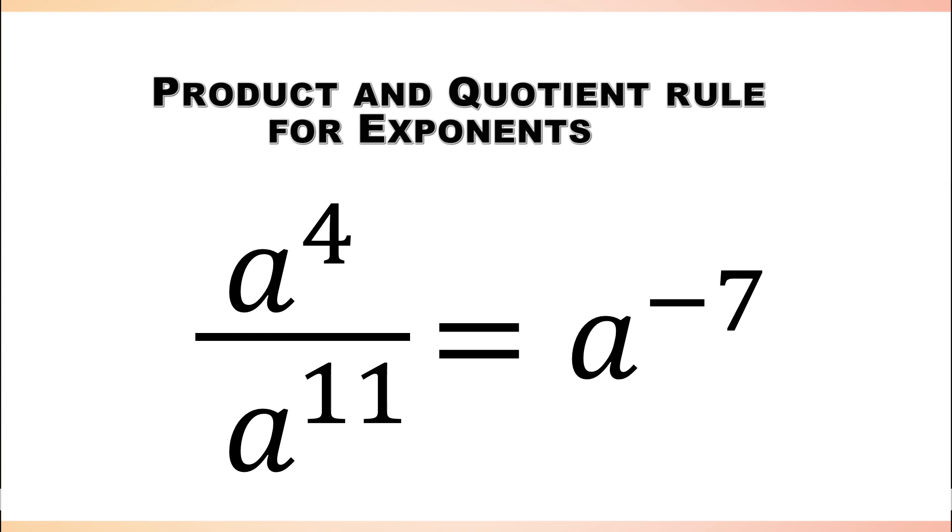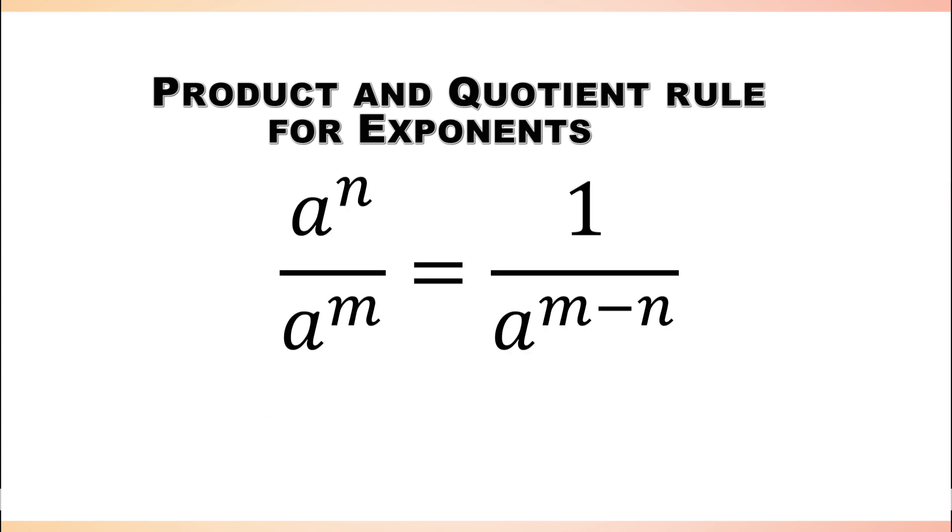We can see that this is similar to the rule of negative exponent. So we can write this as 1 over a raised to m minus n, where a is not equal to 0.